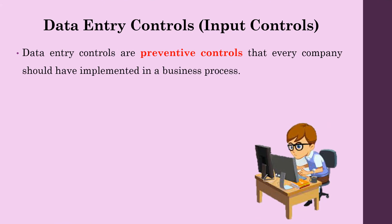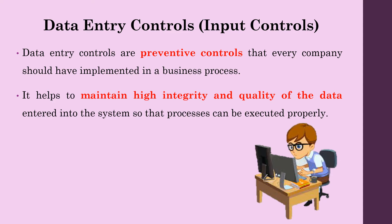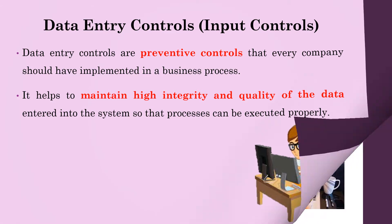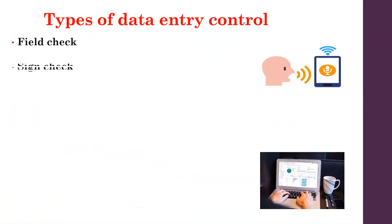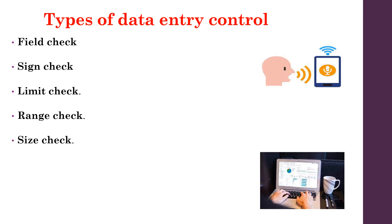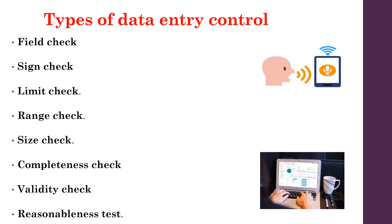Data entry controls are preventive controls that every company should have implemented in a business process. They help to maintain high integrity and quality of the data entered into the system so that processes can be executed properly. Some of the data entry controls include: field check, sign check, limit check, range check, size check, completeness check, validity check, and reasonableness test.